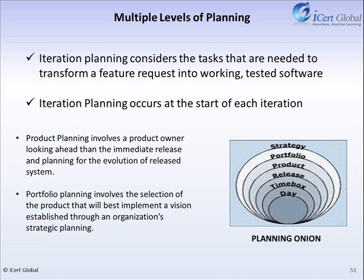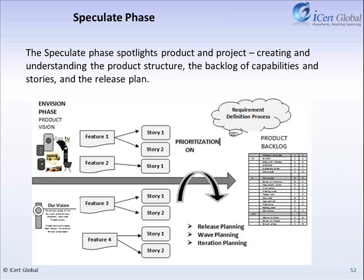Multiple Levels of Planning: planning of Agile projects occurs at multiple levels — namely strategic, release, iteration, and daily — allowing flexibility and adaptability. Iteration planning occurs at the start of each iteration. Product planning involves planning for the evolution of the release system. Portfolio planning involves the selection of the product that will best implement a vision. The Speculate Phase helps in understanding the product structure and the backlog of capabilities.